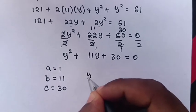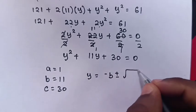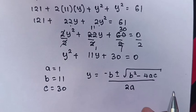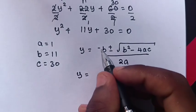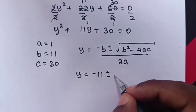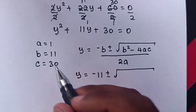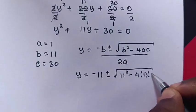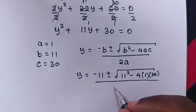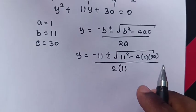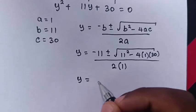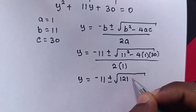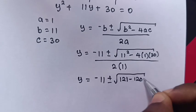To find the value of y from the quadratic formula: negative b plus or minus square root of b squared minus 4ac, over 2a. So y will be equal to negative 11 plus or minus square root of 11 squared minus 4 times 1 times 30, over 2 times 1. That gives negative 11 plus or minus square root of 121 minus 120, over 2.